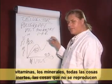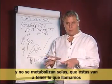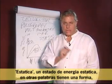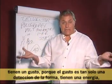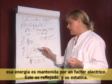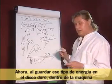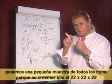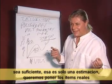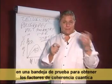We're going to find that the homeopathics, the vitamins, the minerals — all the dead things, the items that do not reproduce and do not metabolize on their own — have what we call a static energy state. In other words, they have a shape; they have a taste, because taste is just a detection of shape. They have an energy, and that energy is held together by an electrical factor. It's reflected and it is static. By storing that type of energy in the hard drive, along inside the machine we put a little test kit of the actual samples of all these items, because we don't believe the 22 by 22 by 22 is quite enough — that's really just a small estimate. We want to put the actual items into a test kit so we get the quantum coherency factors we've written in the books.